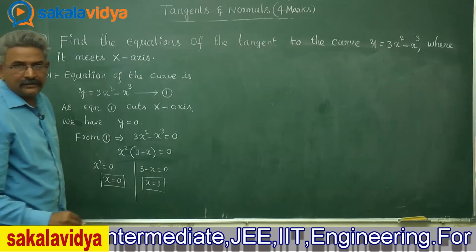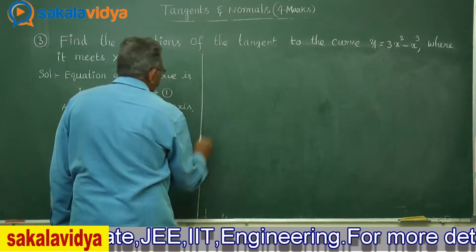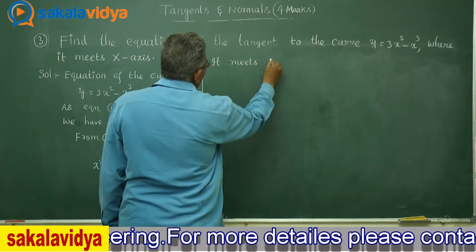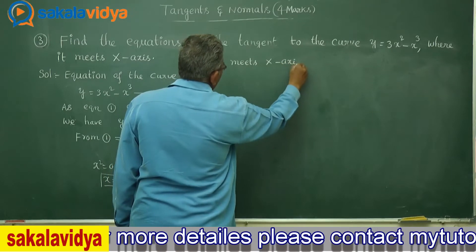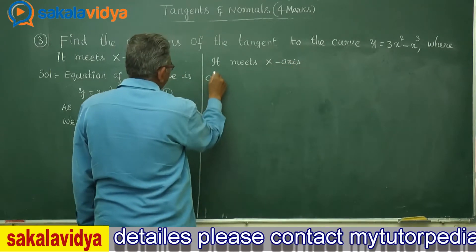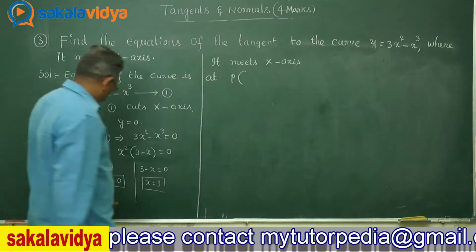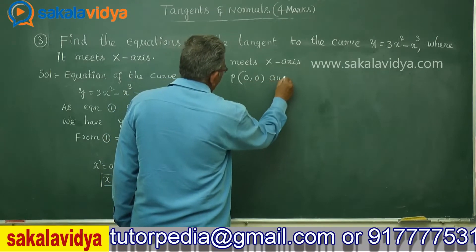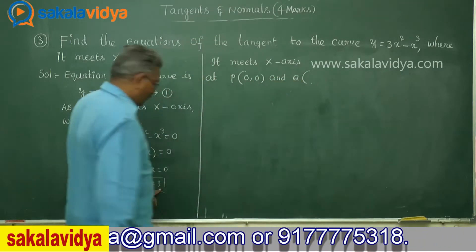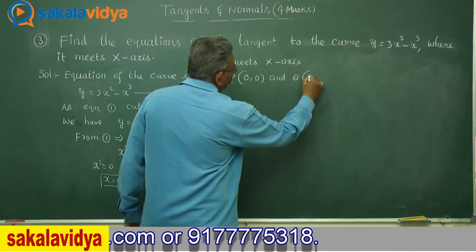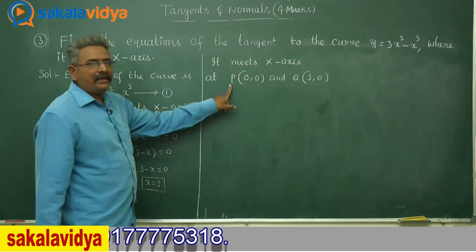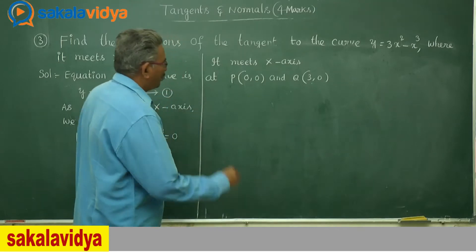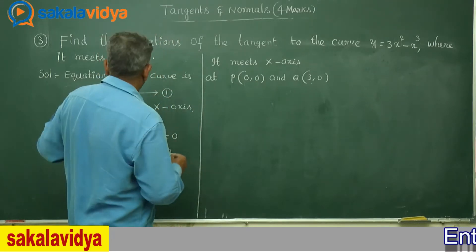So the curve meets the x-axis at P(0, 0) and Q(3, 0). We need to find the equation of the tangent at P and also at Q — two cases will arise. First, let us find dy by dx.